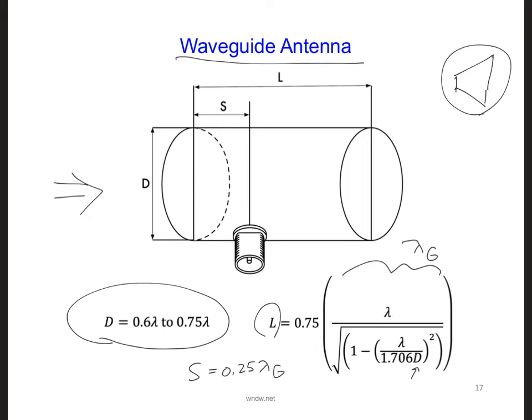S is the distance from the end of the waveguide antenna to where the connector is, the source is. Generally, the smaller the diameter, the longer the waveguide needs to be.